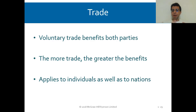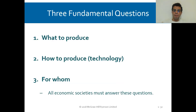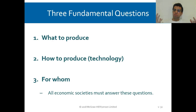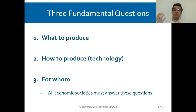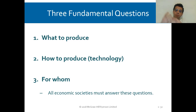The three fundamental questions are: What should we produce? In my example, I cut trees and my neighbor sews clothes because we're good at it. How to produce? That's using technology — the method: by hand, with a chainsaw? And for whom? In my case, for my neighbor, and my neighbor sews clothes for me. All economic societies must answer these three questions: what to produce, how to produce it using what technology, and to whom they need to produce.